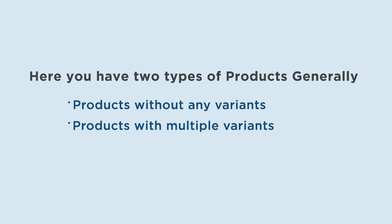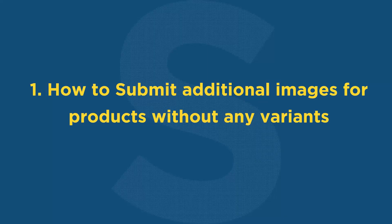Here you have two types of products generally: products without any variants and products with multiple variants. First, how to submit additional images for products without any variants.